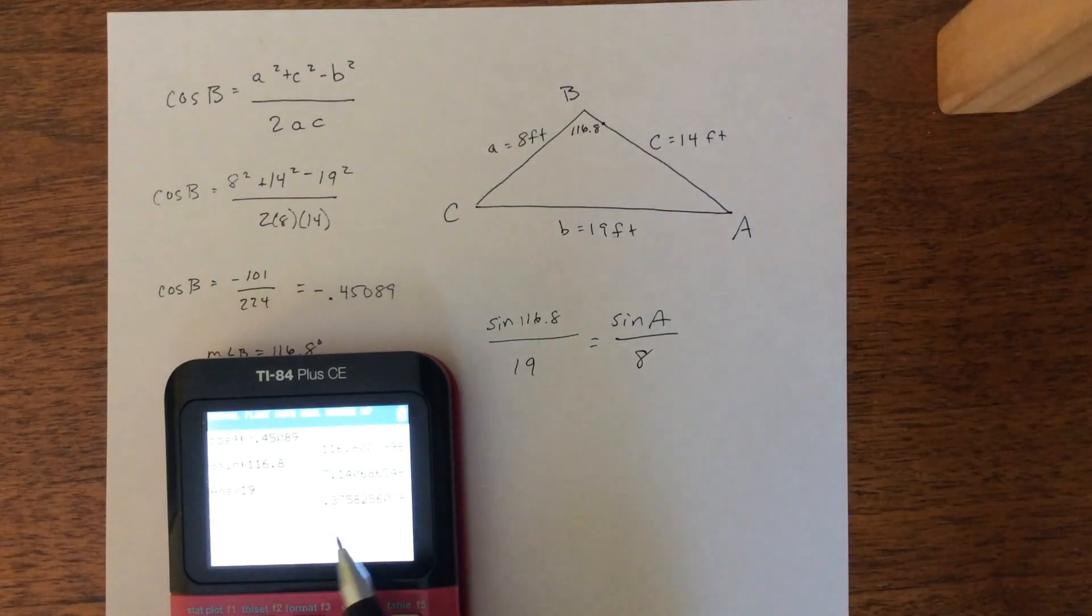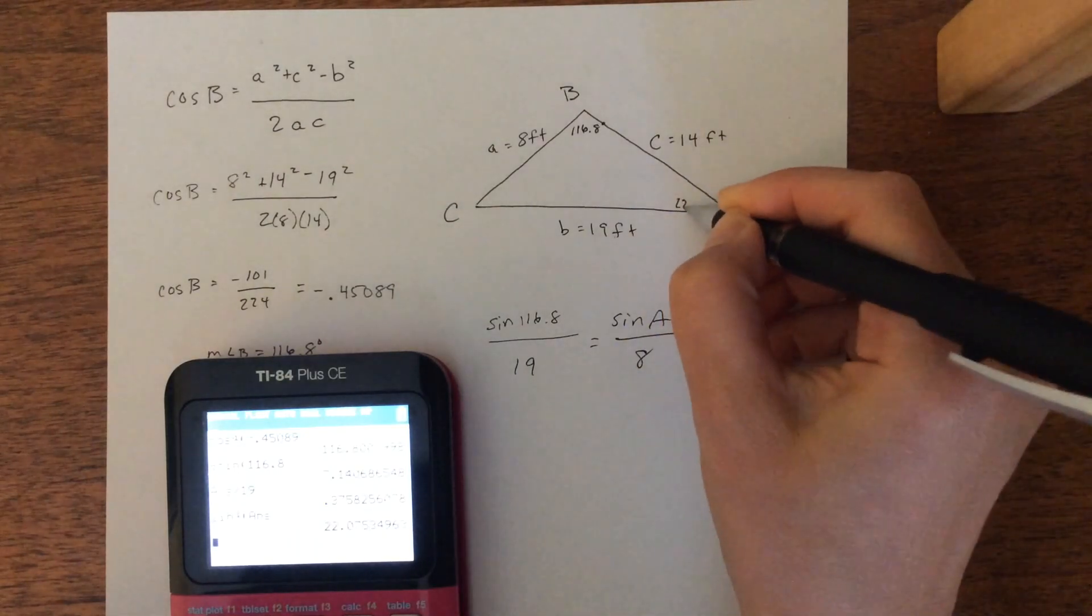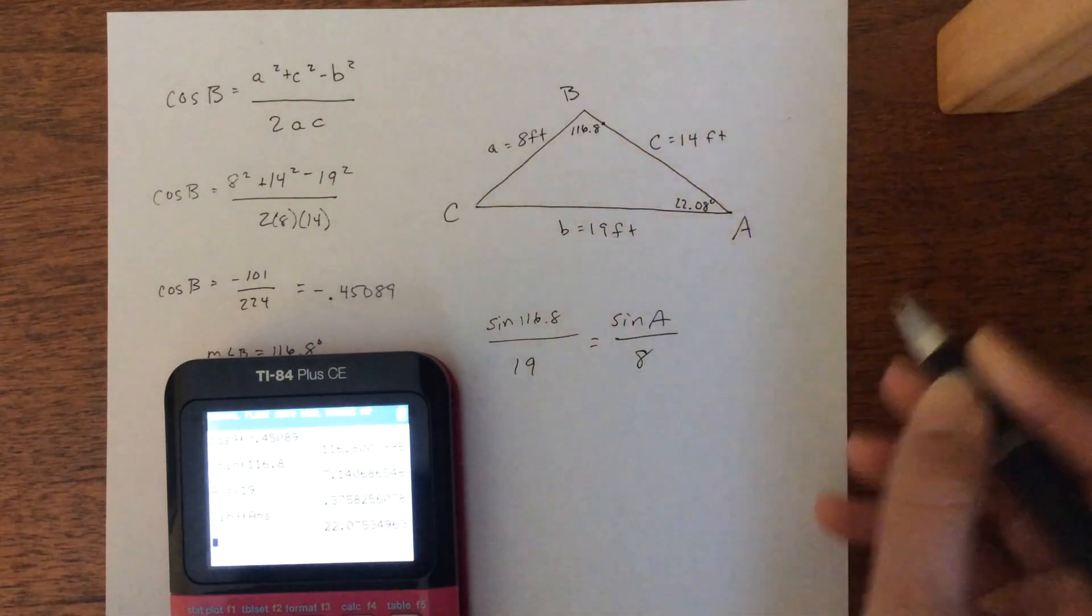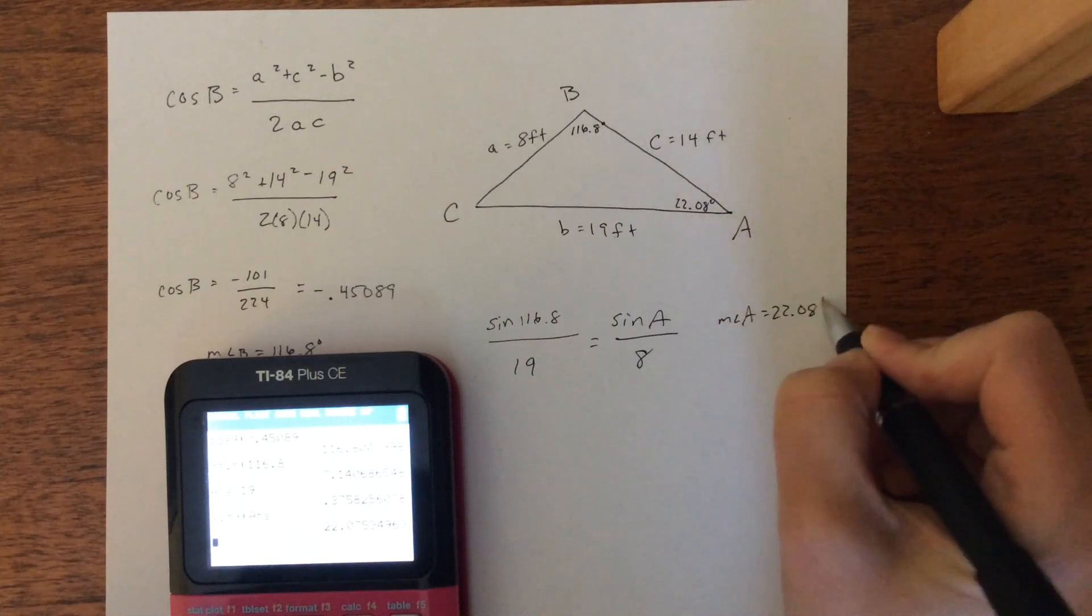We get 0.3758. So we're going to take the inverse of that because we're finding our angle measures and we get 22.075. So we'll call that 22.08 degrees. So the measure of angle A is 22.08 degrees.